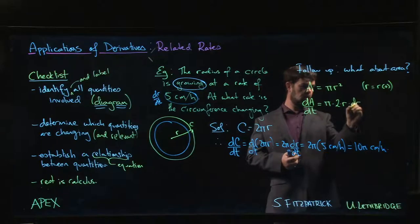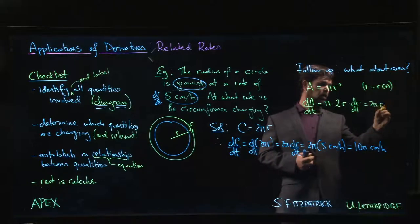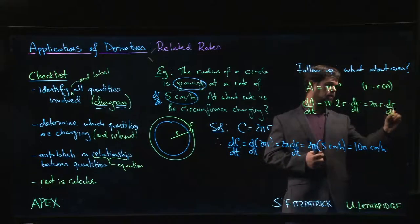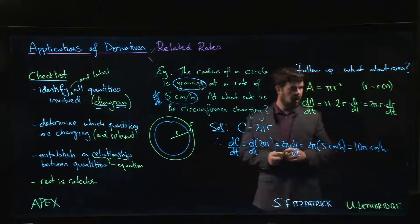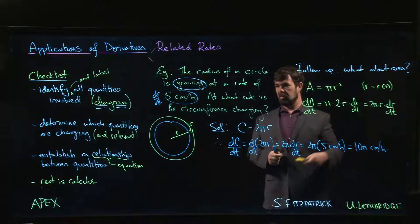So we have 2π times r times dr/dt. And so 2π is a constant, that's fine. Dr/dt we know what that is, it's fine.